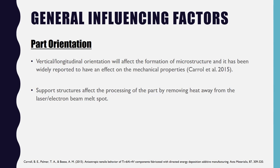The next point is support structures. Support structures affect the processing of the part because they act by removing heat away from the electron beam melt spot. This removal of heat is very important so that any specific location does not get overheated, as overheating at a specific position will reduce the accuracy of the part.